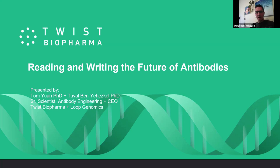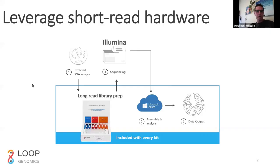But before we go into the actual work that's been done with TWIST, with our joint project, we thought it would be a good idea to go through the basic technology that was used — the enabling technology underlying this work. So just a few words about Loop Genomics. Loop Genomics is a long-read sequencing company based in the San Francisco Bay Area.